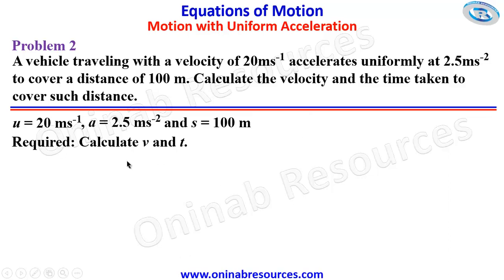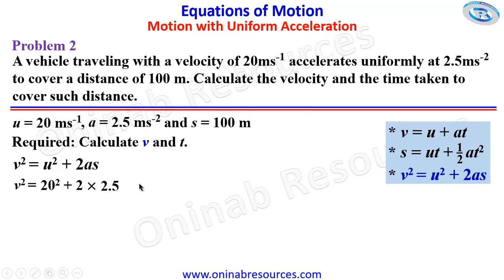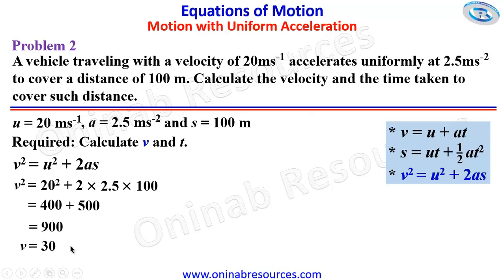Starting from V, we check our equations of motion. We don't have T for the first equation, and the second equation has no V, so invariably we are using the third equation. Substituting into the third equation: V squared is equal to 20 squared plus 2 times 2.5 times 100. 20 squared is 400. 2 times 2.5 is 5, times 100 gives 500. So 400 plus 500 gives 900. Since V squared is 900, V is the square root of 900, which gives 30 meters per second.